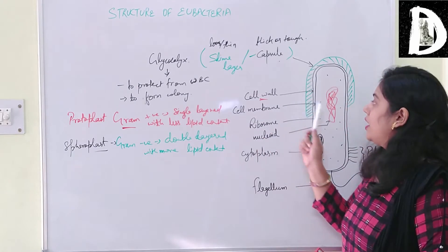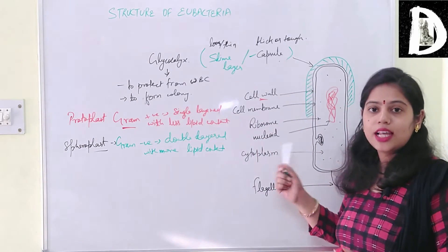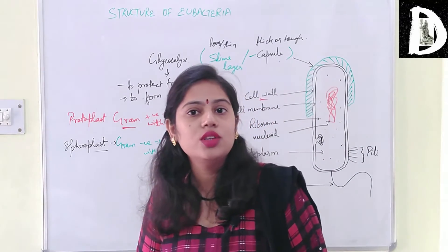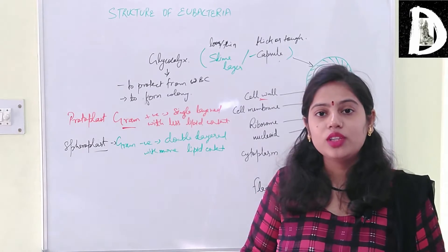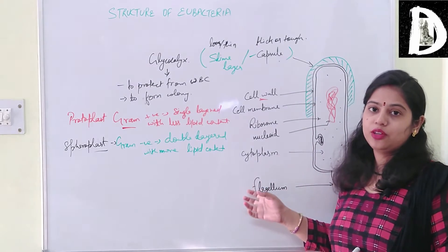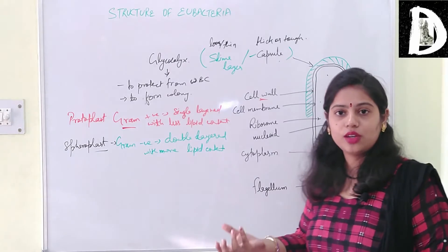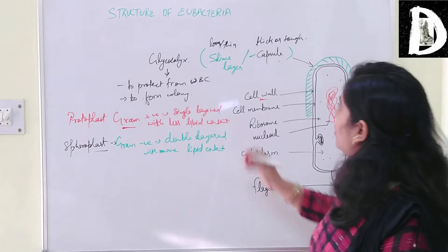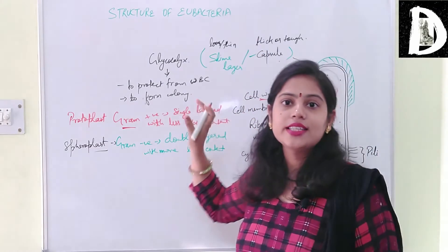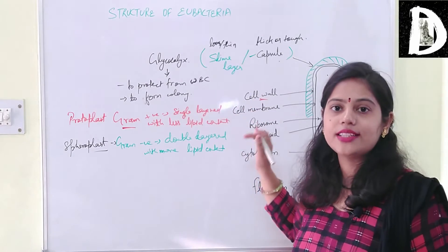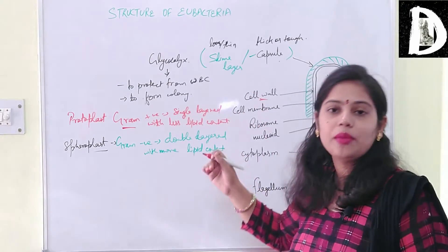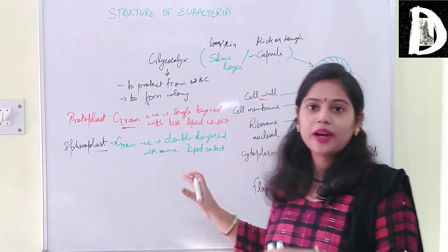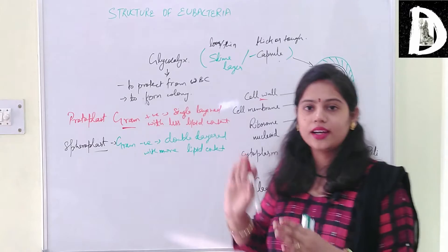The next layer is the cell membrane, which is similar to the animal cell and eukaryotic cell - it is made of lipoproteins. The structure is exactly similar to the eukaryotic cell membrane. Together, glycocalyx, cell wall, and cell membrane are called the cell envelope. Their main function is to protect the whole bacterial cell.